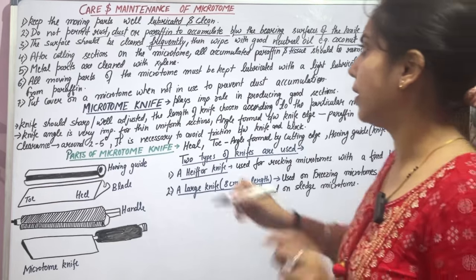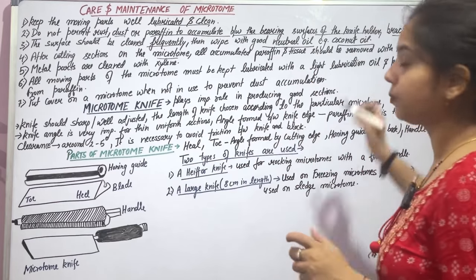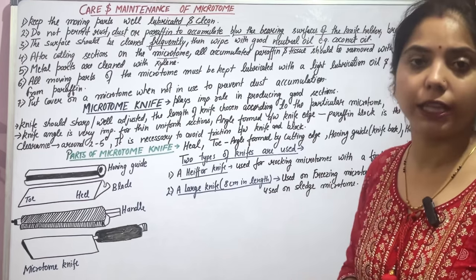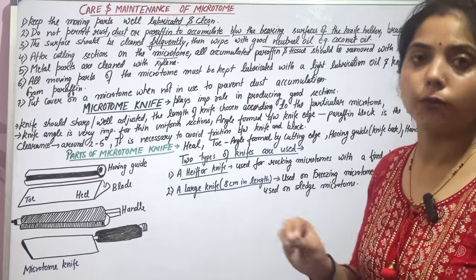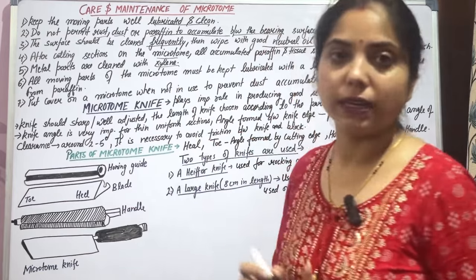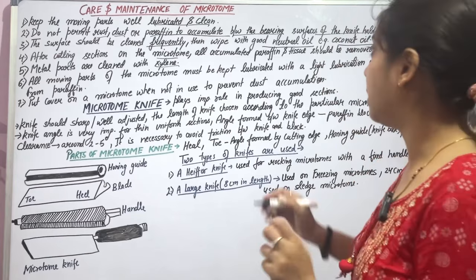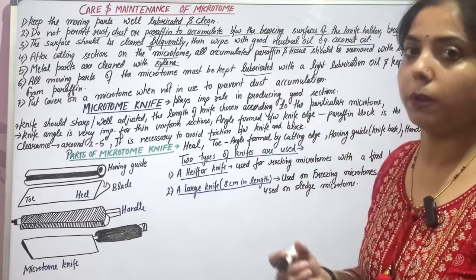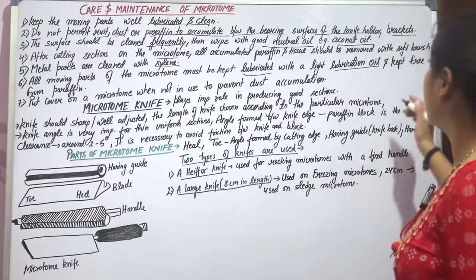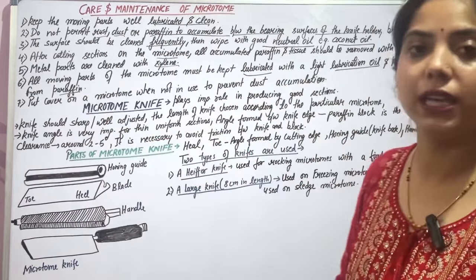After cutting sections on the microtome, all accumulated paraffin and tissue debris should be removed with a soft brush. Metal parts should be cleaned with xylene. All moving parts must be lubricated with a light lubricant oil and kept free from paraffin. Do not allow paraffin to build up on the microtome.